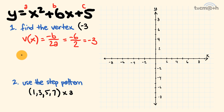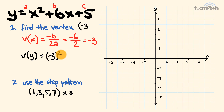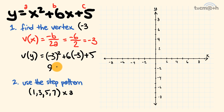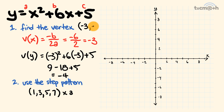Now we substitute x equals negative 3 into our equation to work out the y-coordinate of the vertex. We have negative 3 squared, plus 6 times negative 3, plus 5. Negative 3 squared equals 9. We have 6 times negative 3, so minus 18, plus 5. 9 minus 18 is negative 9, plus 5 is negative 4. So we have the y-coordinate, which is negative 4. Therefore the vertex is at the coordinate negative 3, negative 4.